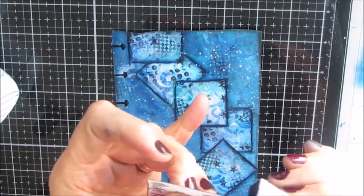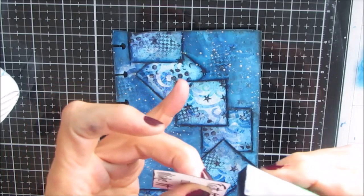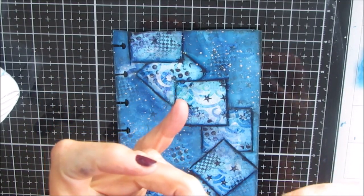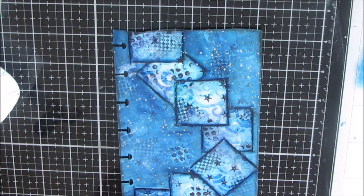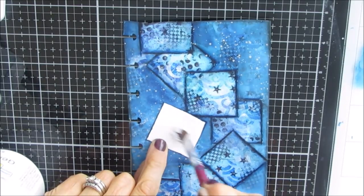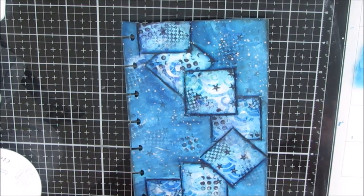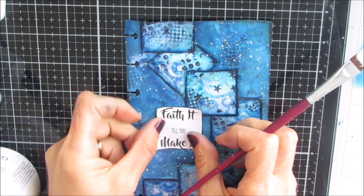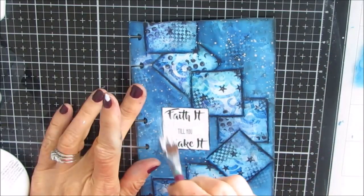So I'm taking the Prussian blue—and I think I had some black on this makeup sponge as well—and just edging the sentiment just to give it a bit of a border, and just adhering this down with gel medium.